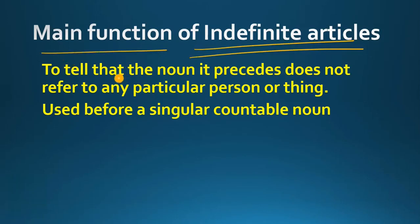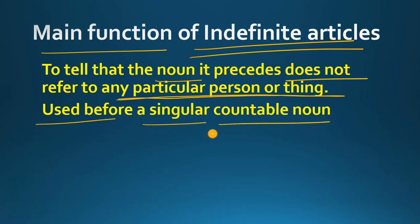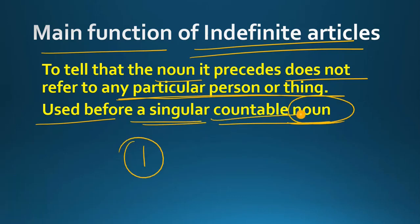Indefinite articles का main function क्या है? They tell that the noun they precede does not refer to any particular person or thing. जब हम किसी general noun, किसी general name, place या person की बात करते हैं, तब हम indefinite article use करते हैं. It is also used before a singular countable noun. तो indefinite article के बाद आने वाला noun singular यानि कि एक चीज़ के लिए होता है and it is countable — उसे हम number से count कर सकते हैं.